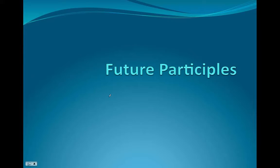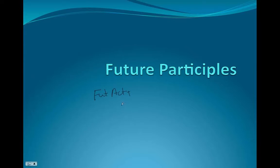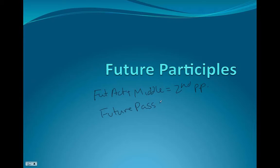In this lesson you're going to learn how to form the future participles. Because they're futures, just like the future indicative, we're going to have a different form for the future active, the future middle, and the future passive. The future active and middle will be formed from the second principal part. The future passive, if you remember, is formed from the sixth principal part, with some modification.